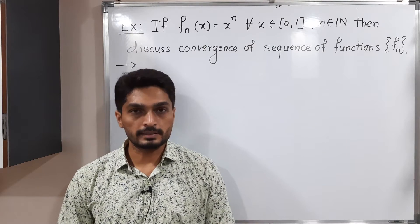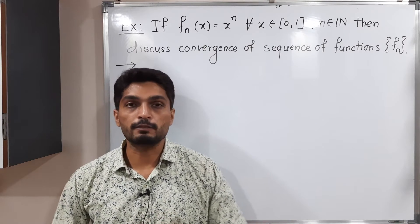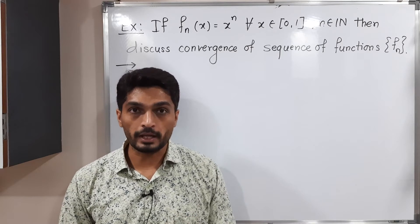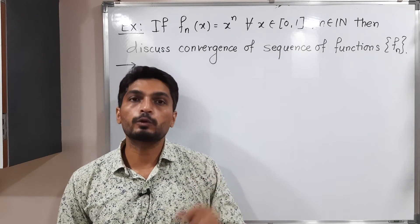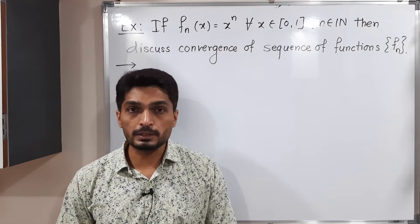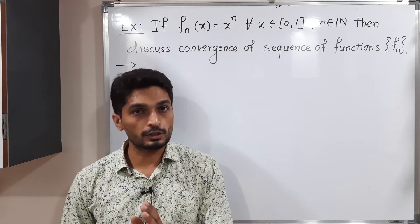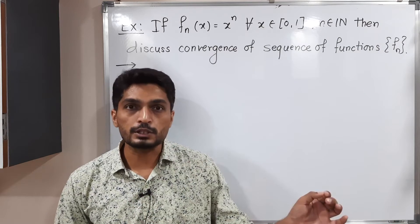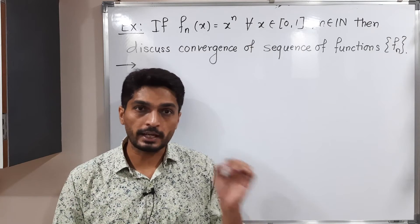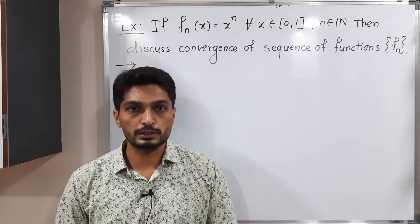Let us discuss this example. We have a sequence of functions fn(x) = x^n, where each function is defined on the closed interval [0,1]. We have to discuss its convergence — that is, whether the sequence of functions converges to any function or not, and if it does, whether that convergence is pointwise or uniform convergence.